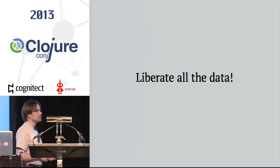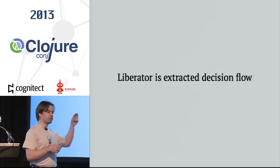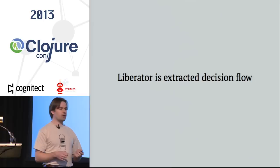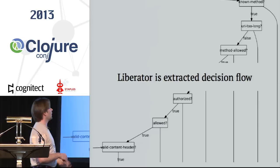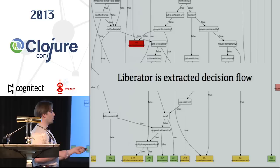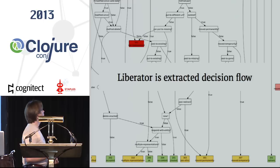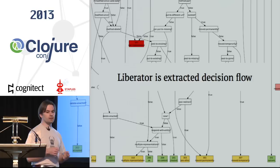What we want to do is liberate all the data and not care about all this if-else stuff. Liberator is basically the extracted decision flow — more complete — to reach all of those 47 status codes. I have a visualization in the background; it's such a large diagram that I show only part of it. At the lower part we finally end at some location where we generate a response with different status codes — color coded, with yellow for redirection and green for successful status codes.